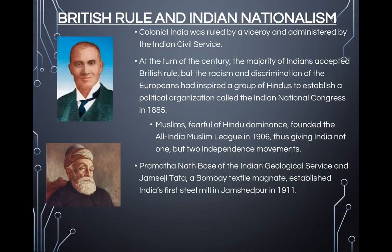At the turn of the century, the majority of Indians accepted British rule. But the racism and discrimination of Europeans had inspired a group of Hindus to establish a political organization called the Indian National Congress in 1885. Muslims, fearful of Hindu dominance, founded the All-India Muslim League in 1906, thus giving India not one but two independence movements — very important to remember when we get to Indian independence and the partition of Pakistan. Pramantha Nath Bose and Jamshedji Tata, a Bombay textile magnate, established India's first steel mill in 1911, and these two men would become powerful symbols of Indian national pride.